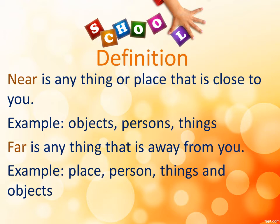Far is anything that is away from you. So anything that is not close to you — that you can stretch your hand out and touch it — it would be far. Some things that can be far are a place, person, things, and objects. So once you cannot stretch your hands out and touch that object, then it is not near to you; it is far or far away from you. So anytime your mummy or you have to go to get something, that object is far away from you.